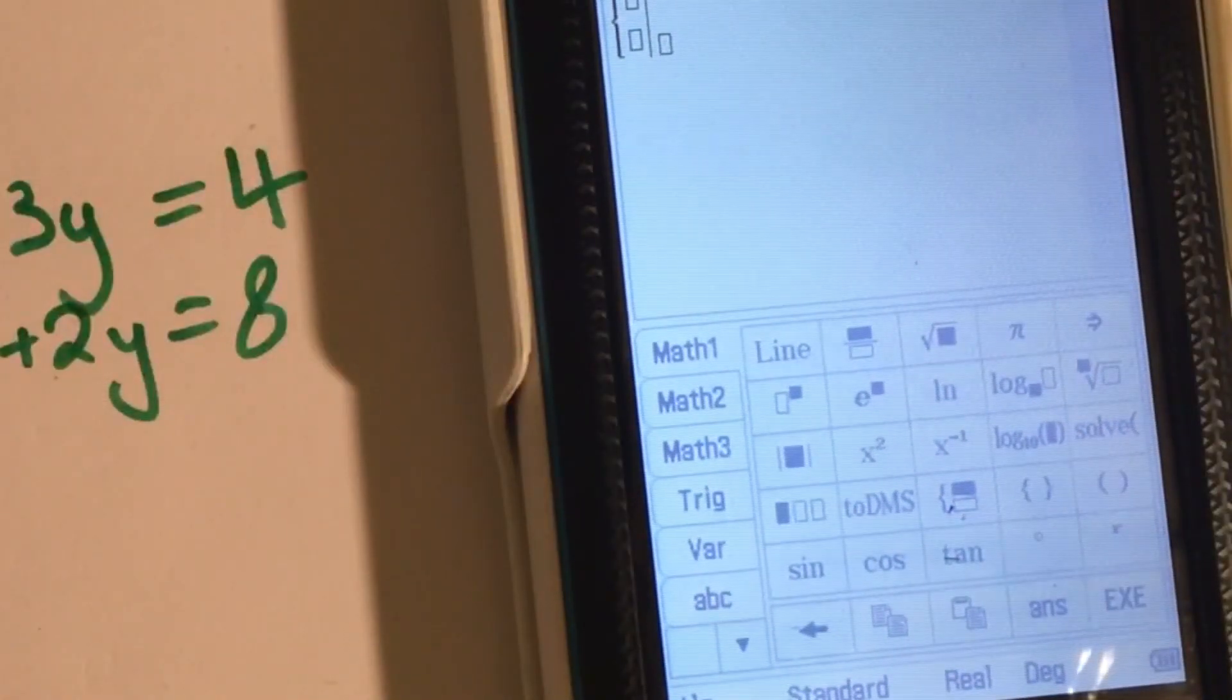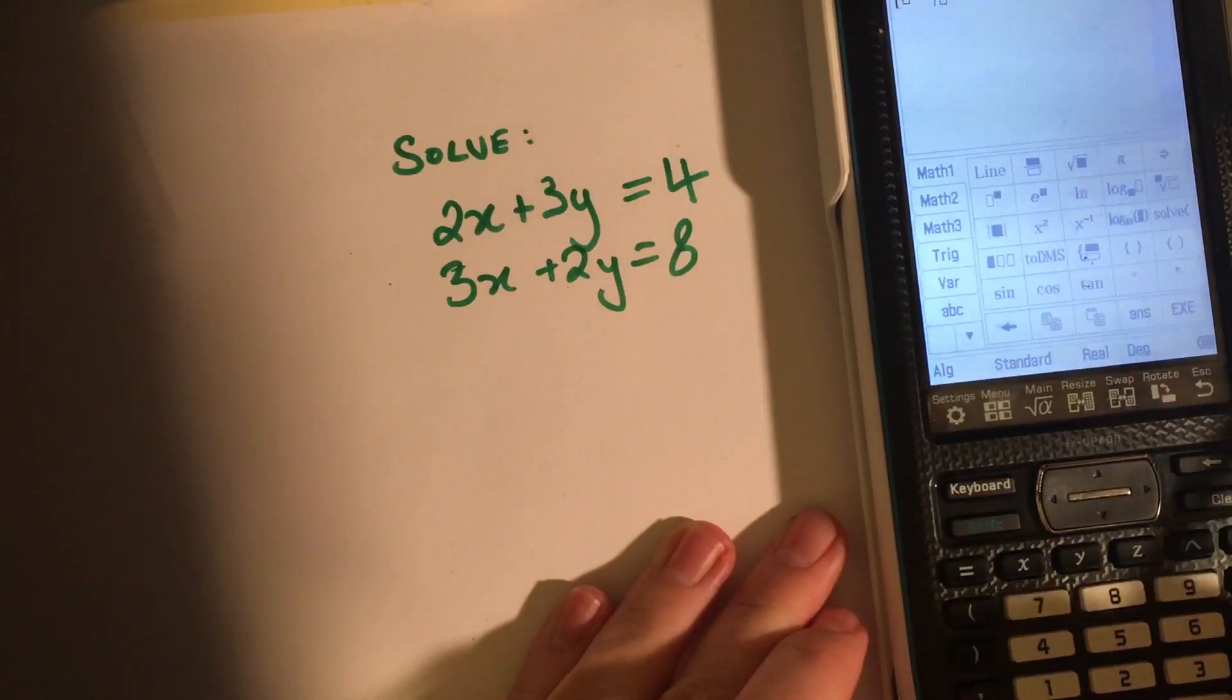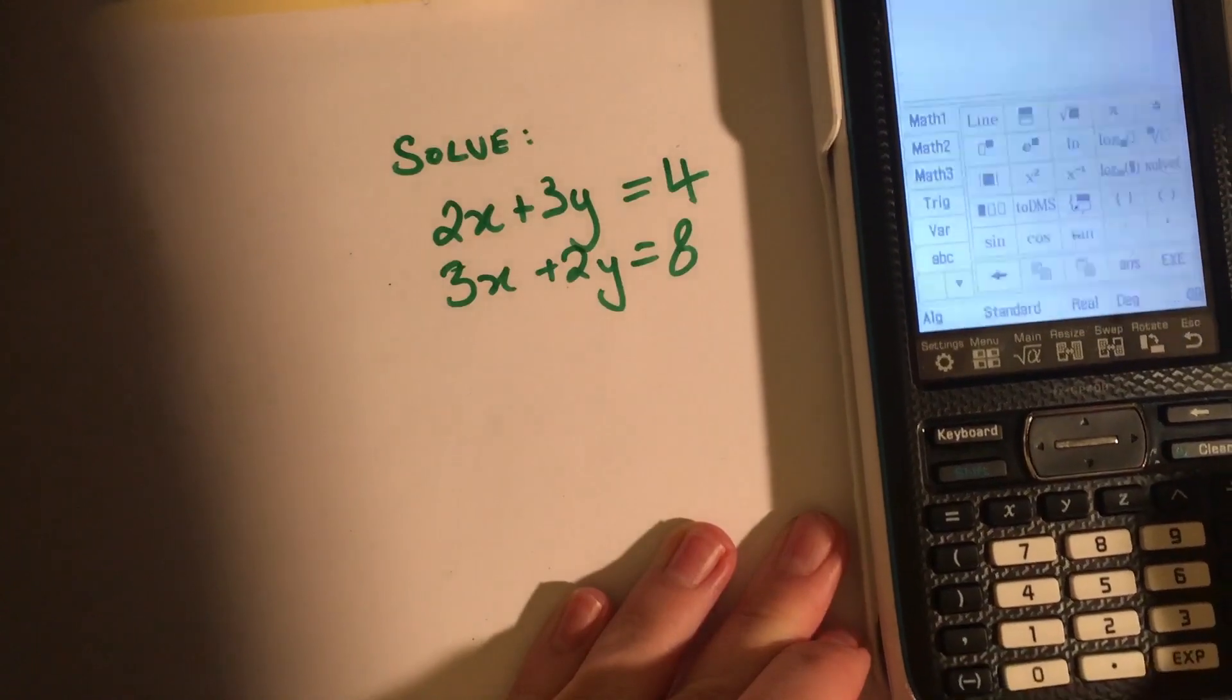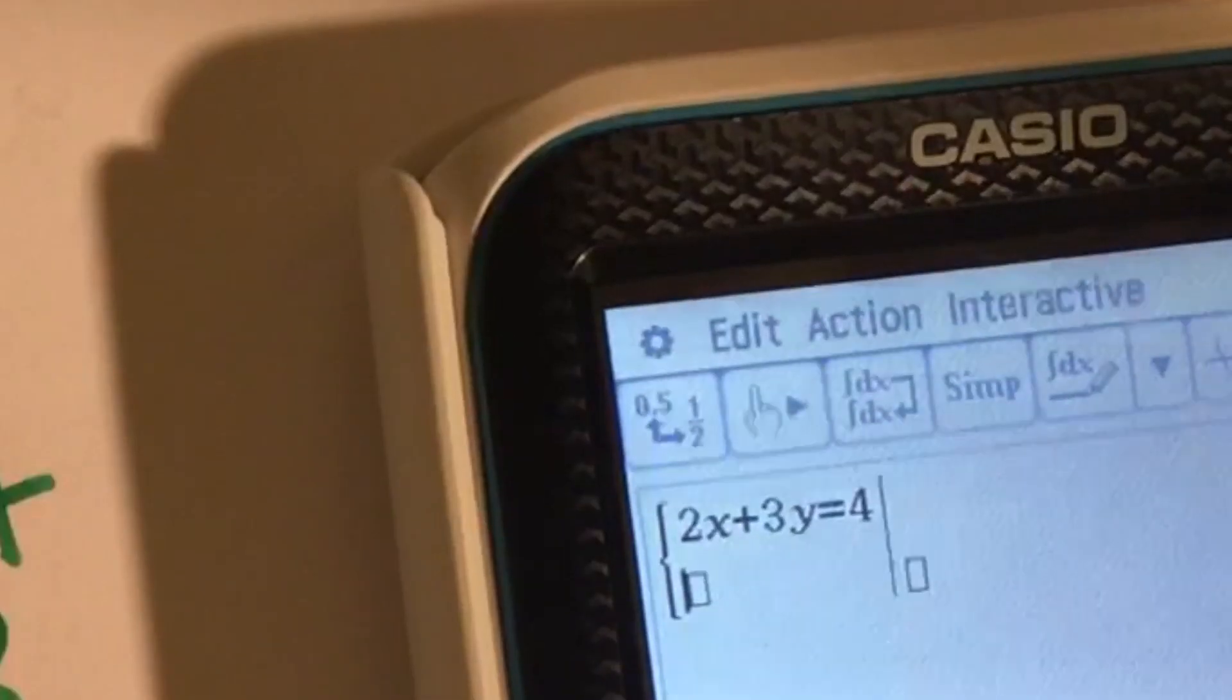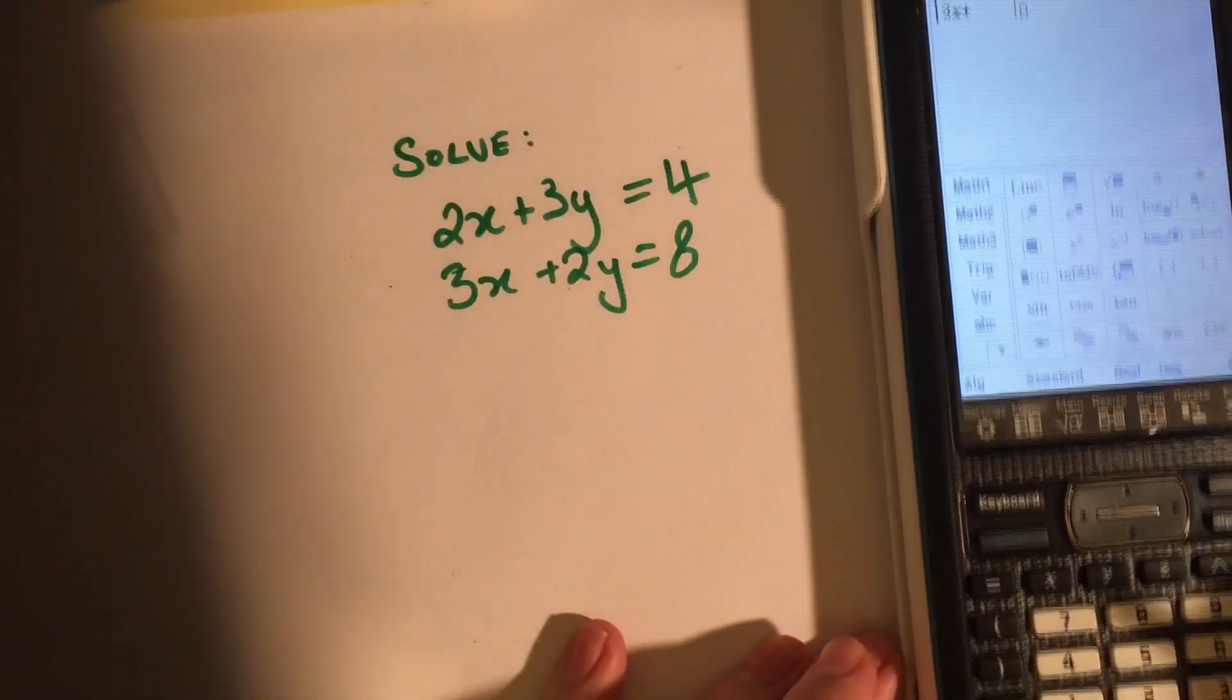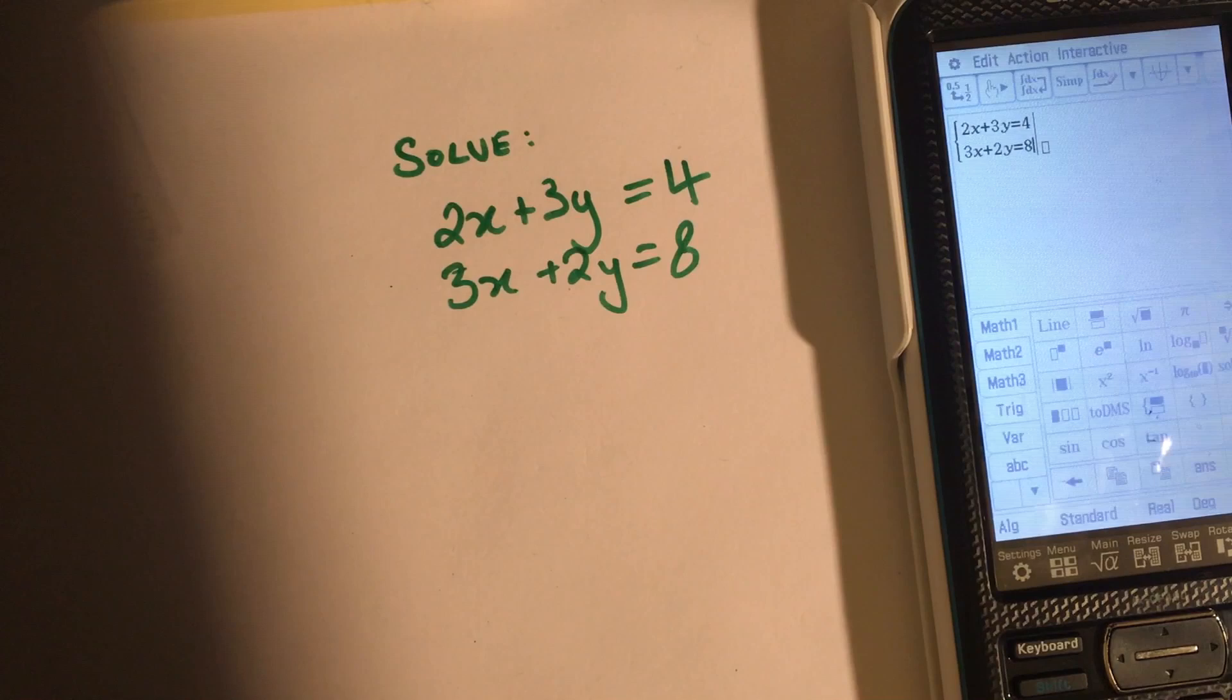In the first box, I'm going to type the first of these equations: 2x plus 3y equals 4. And then in the next box down, I'm going to type the other equation: 3x plus 2y equals 8.